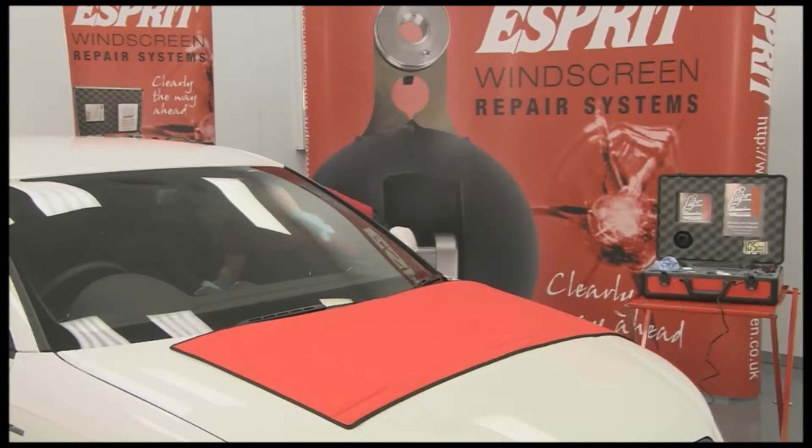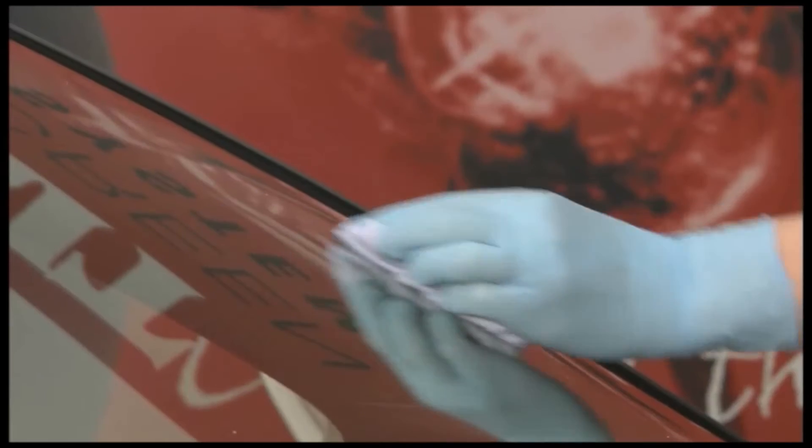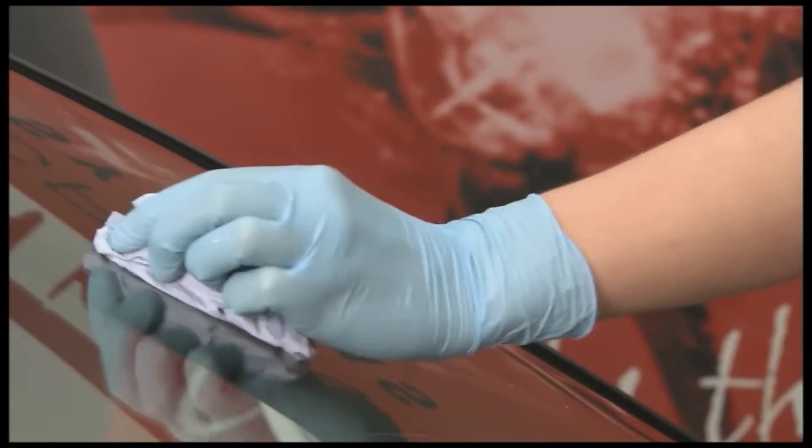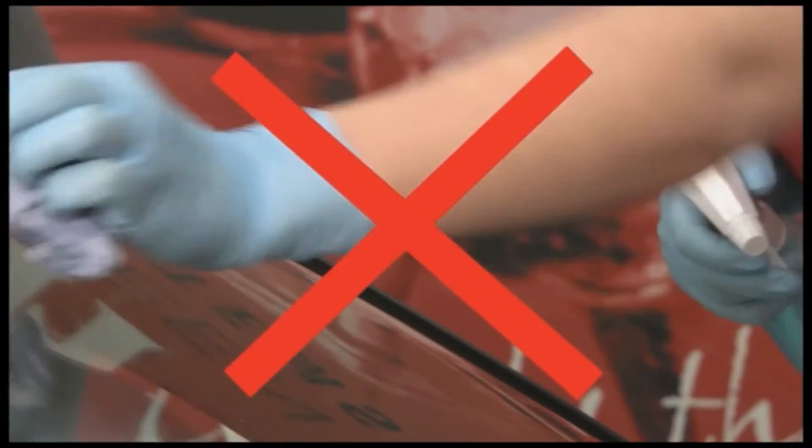It's important that the inside and outside of the screen are thoroughly cleaned with a dry cloth before using any repair materials. Windscreen cleaners must not be used because they could penetrate through the damaged area and attack the polyvinyl layer in the center of the glass.